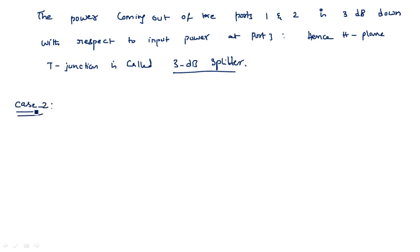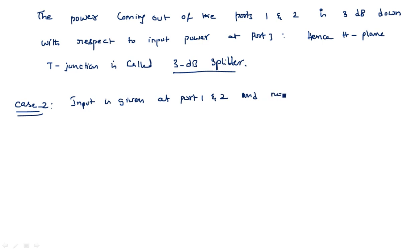Now coming to Case 2: Input is given at port 1 and port 2, and no input at port 3. We take a common input such that A1 = A2 = a, and A3 = 0, since no power is incident at port 3.